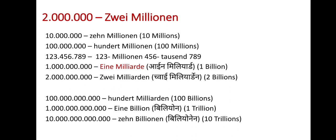For numbers beyond 9 digits, the number is counted as 'Milliarde'. 'Milliarde' means 1 billion in English. For multiple billions, we say 'Milliarden'. Beyond that, trillions are counted as 'Billionen', so 10 trillion is 'zehn Billionen'. In this way we count in German.